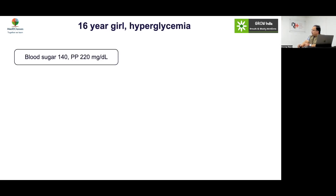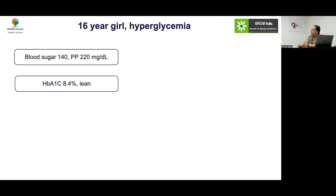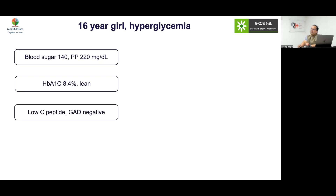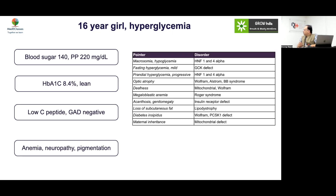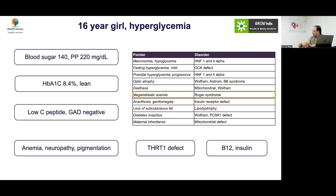Case 16: A 16-year-old girl with hyperglycemia, only marginally elevated blood sugars, lean, low C-peptide, GAD negative, with anemia, neuropathy, and pigmentation. This looks like genetic diabetes — lean with low C-peptide and GAD negative. But which genetic form? Rogers syndrome. This is most likely Rogers syndrome — a thiamine transporter defect, associated with megaloblastic anemia. Treatment with B1 (thiamine) and insulin will help.